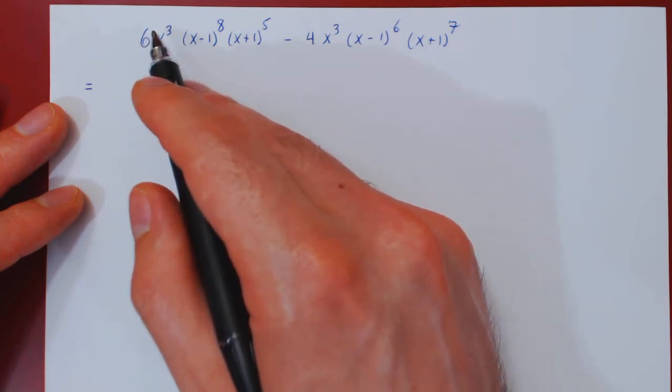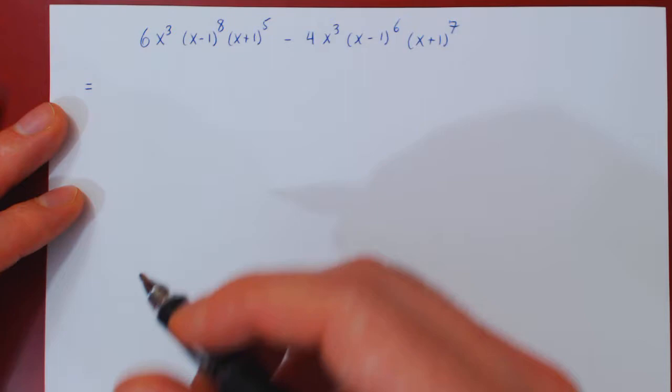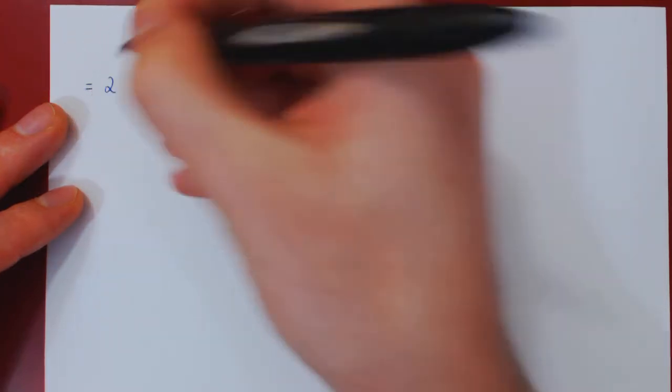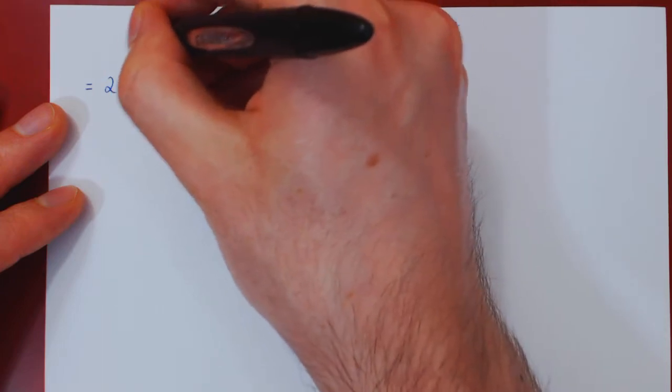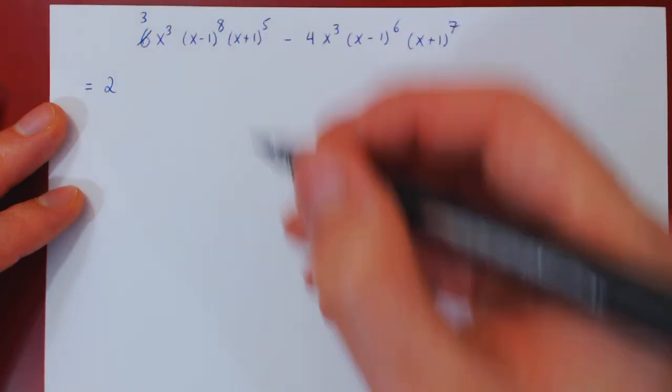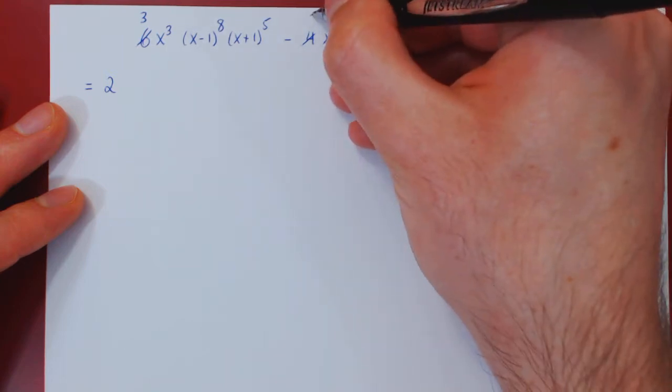Well, we have a multiple of 6 in the first, 4 in the second. They share a common factor of 2. So we can factor 2 out, but if you factor 2 from a 6, you're left with a 3, and if you factor a 2 from a 4, you're left with 2.